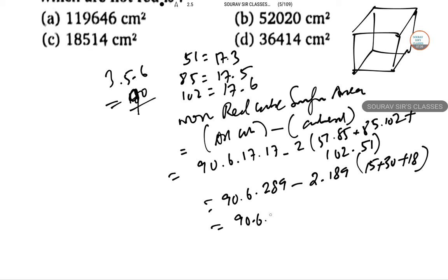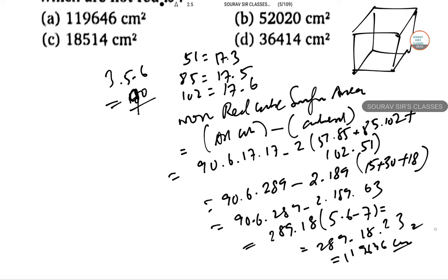So 90 into 6 into 289, minus 2 into 189 into 63. So 289 into 18 is 5202 minus 7, that is 289 into 18 into 23. That is the answer, so 119646 cm squared.